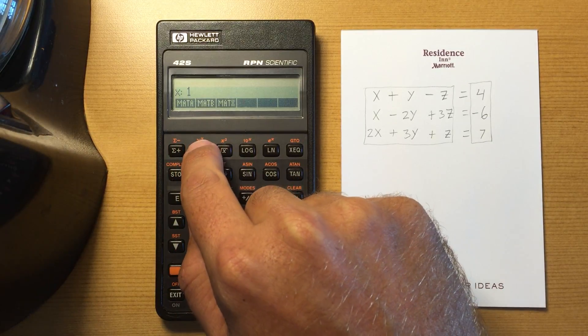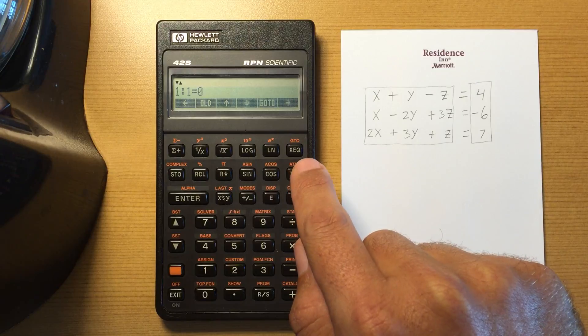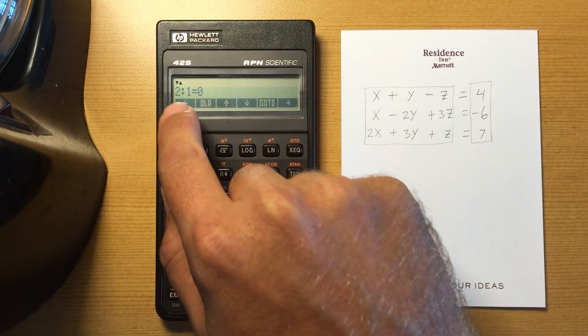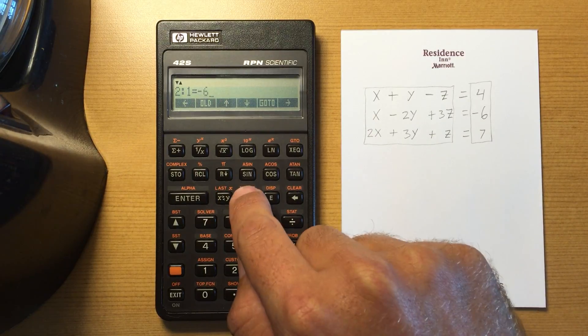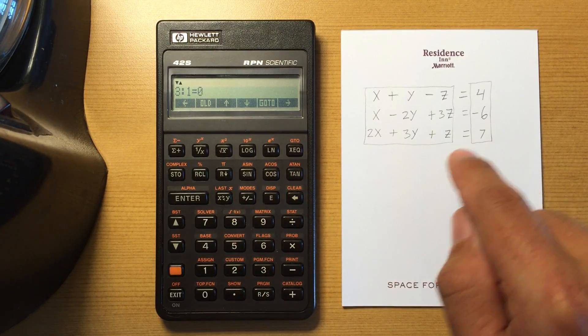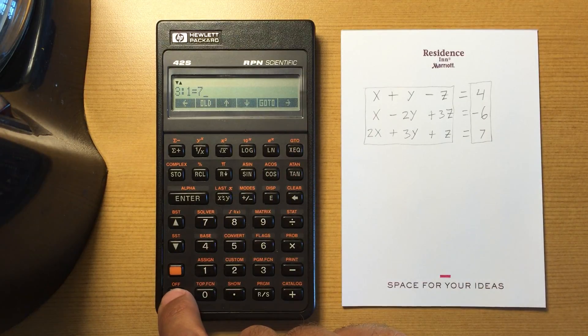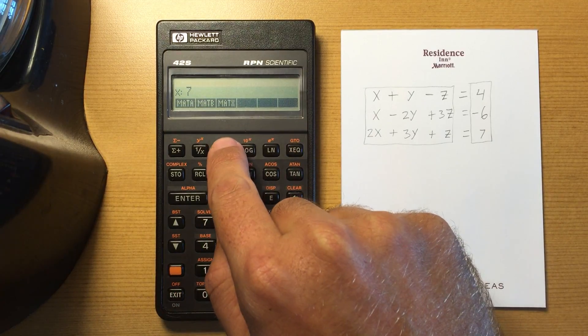Now for our matrix B we want to enter in 1,1 which is 4, 2,1 which is negative 6, and 3,1 which is 7. Alright exit there and then hit the matrix X.